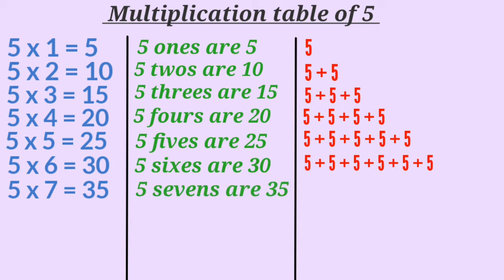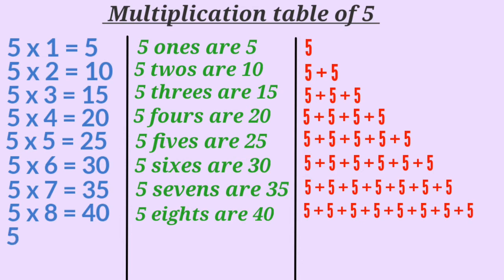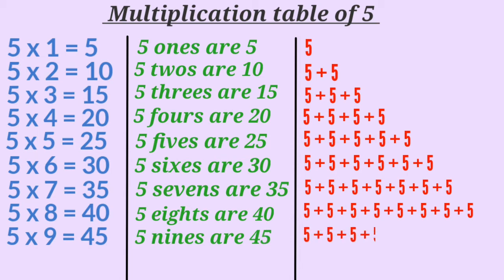5 multiplied by 7 is 35, or 5 sevens are 35. Here we are adding number 5 seven times. 5 multiplied by 8 is 40, or 5 eights are 40. Which means we are adding number 5 eight times. 5 multiplied by 9 is 45, or 5 nines are 45. Which means we are adding number 5 nine times.